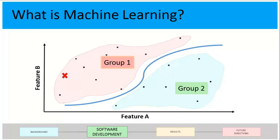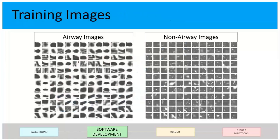If a new person walked into this room and we didn't know their gender, we'd take their height and weight, plot it, and the program could then say it thinks this is a female. That's the basis of my project — but instead of having a female group and a male group, I had airways and non-airways. And instead of having only two features, I had 412.